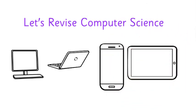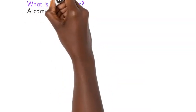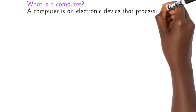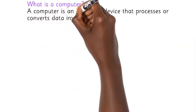Let's revise computer science. What is a computer? A computer is an electronic device that processes or converts data into information.